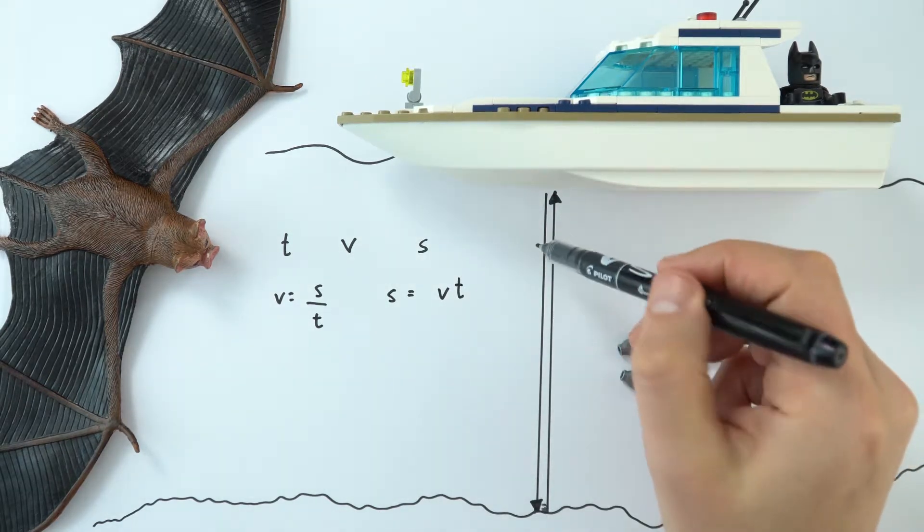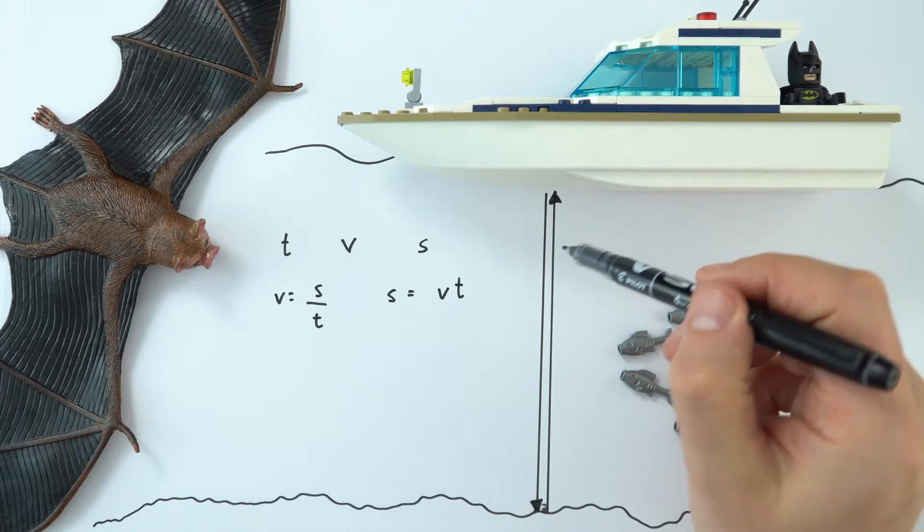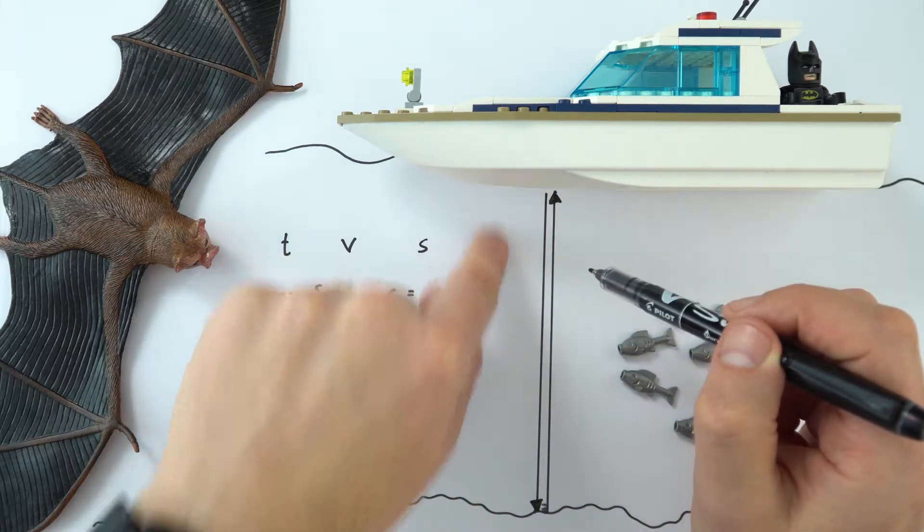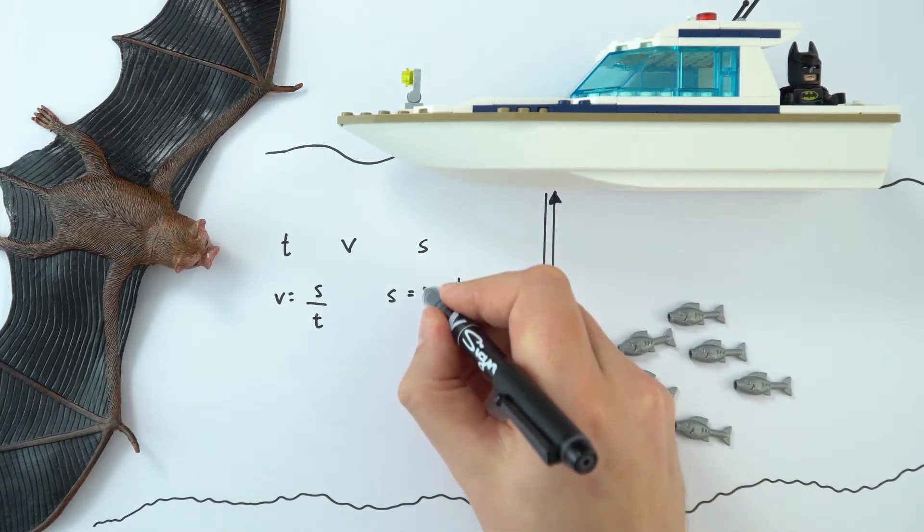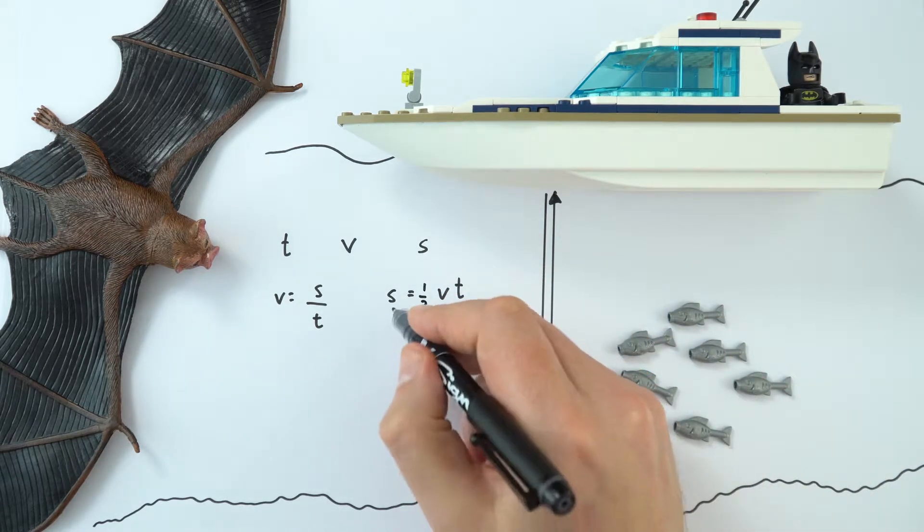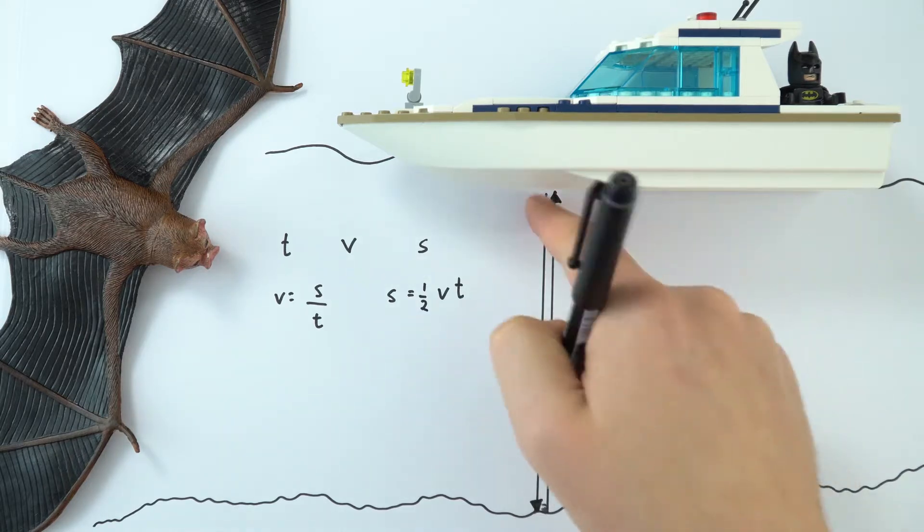But if all we use is the time it takes to go there and back again, this is actually recording twice the distance that we need. So it's going there and coming back again, and therefore we need to half this answer to work out the actual distance s from here to here.